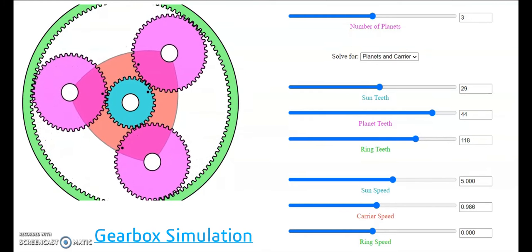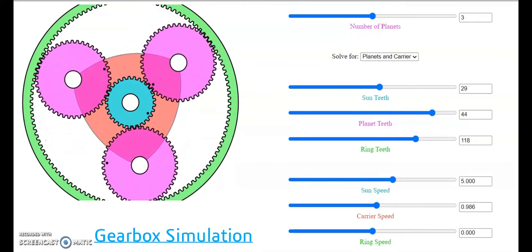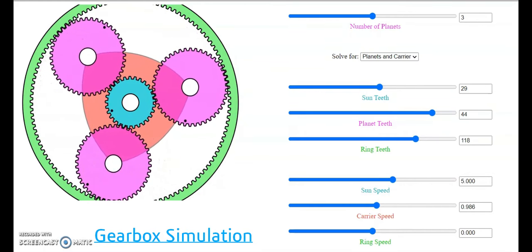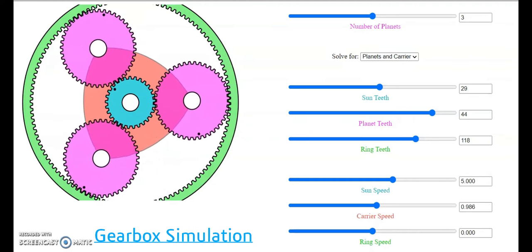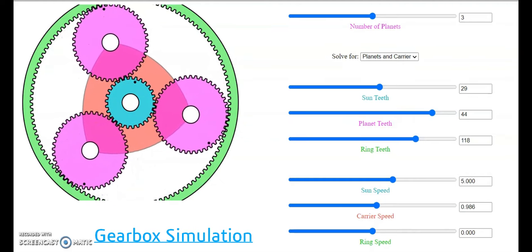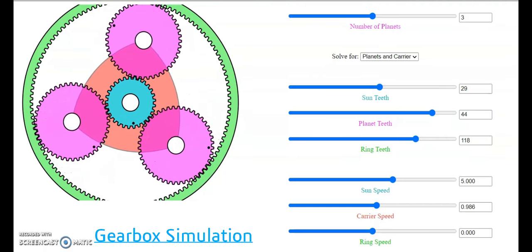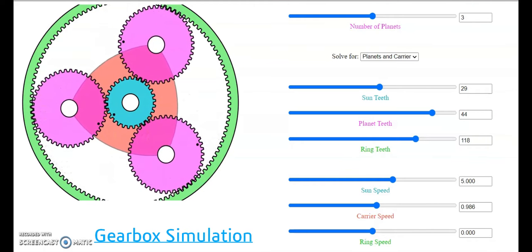The sun gear in the center has 29 teeth. The planets have 44 teeth and the ring gear has 180 teeth. The ratio of the sun to the planets is 5 to 1 when the ring gear is stationary. All the gears have a modulus of 0.3.